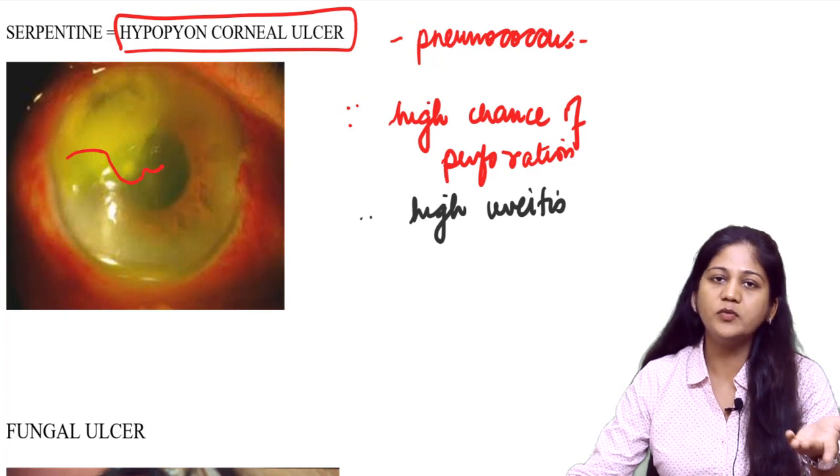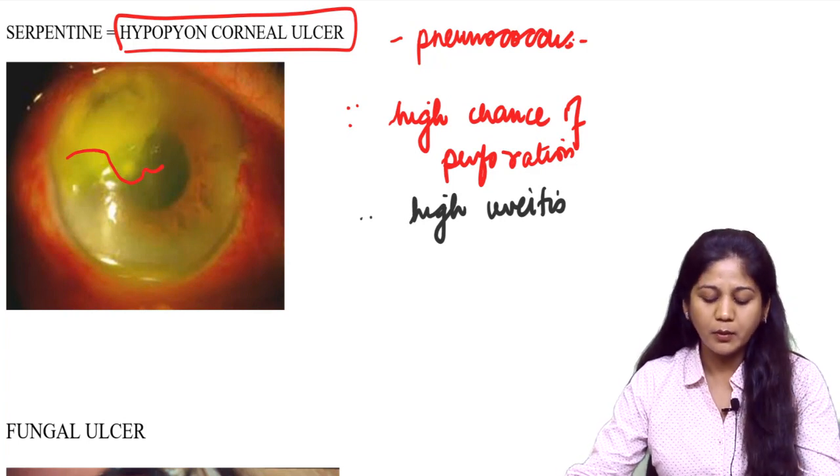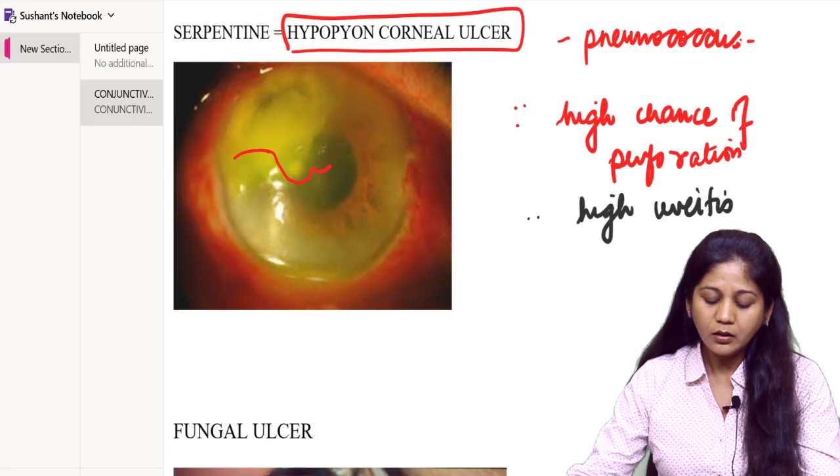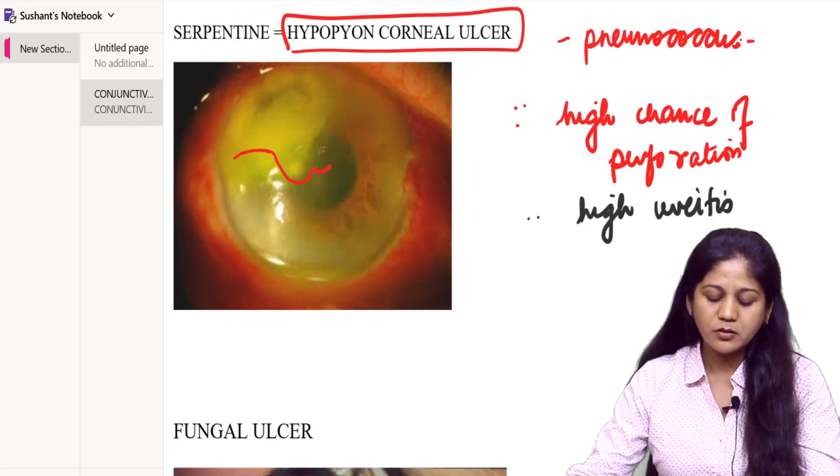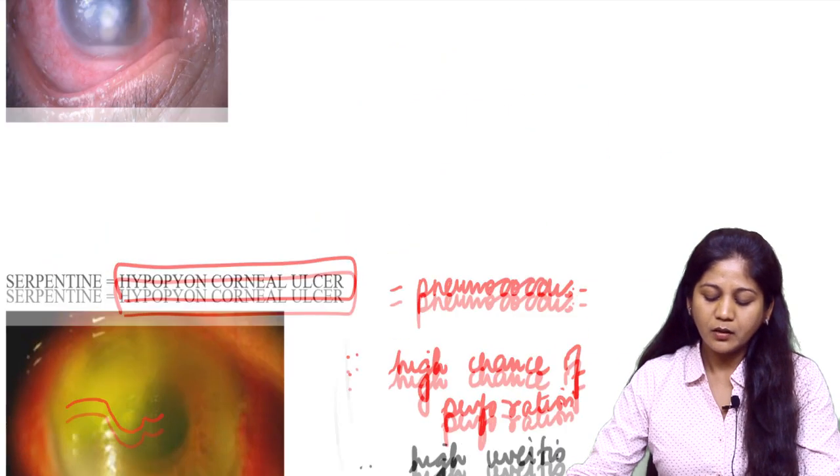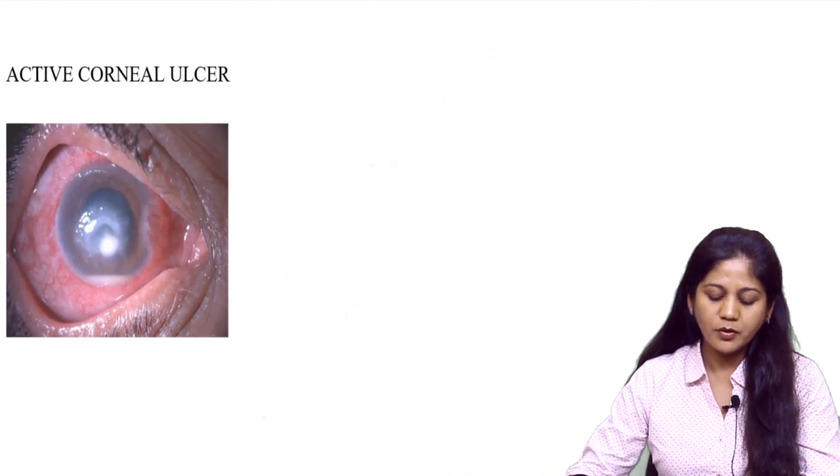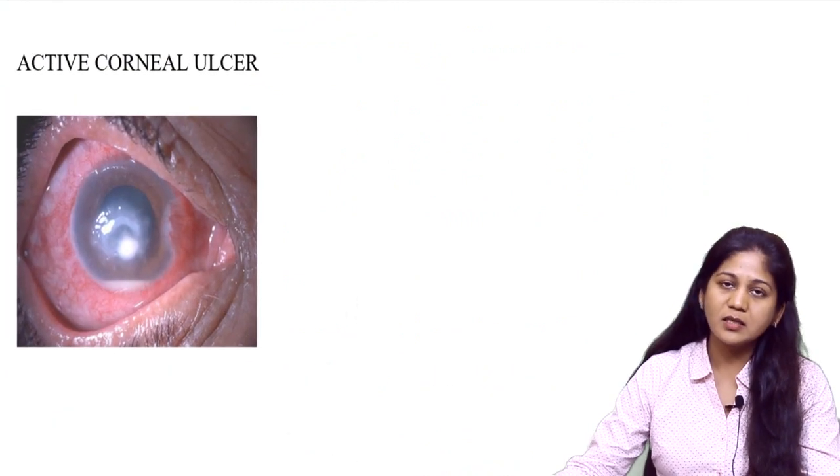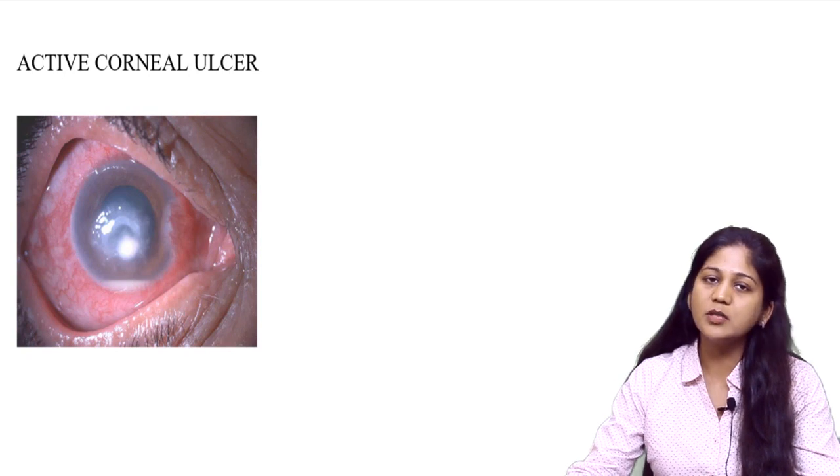If we look at a picture of corneal ulcer, this is a typical picture of a patient with active corneal ulcer. Let us now discuss the symptoms and signs.